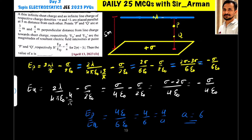A thin infinite sheet charge and an infinite line charge of respective charge densities plus sigma and plus lambda are placed parallel at 5 meter distance from each other. Points P and Q are at perpendicular distances of 3 by pi meter and 4 by pi meter from the line charge.